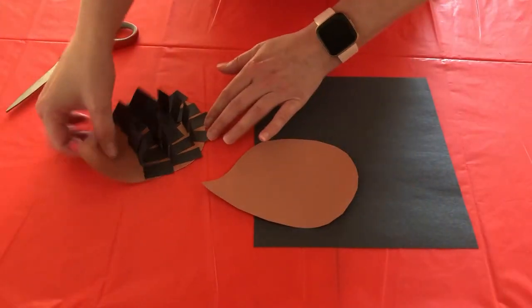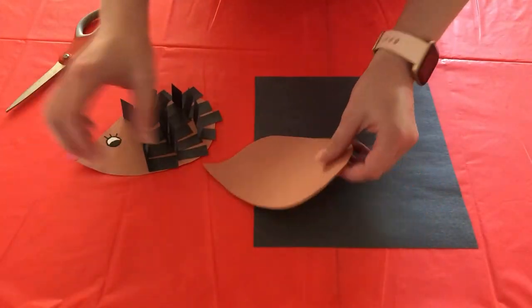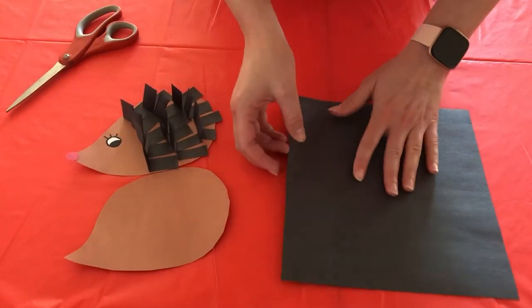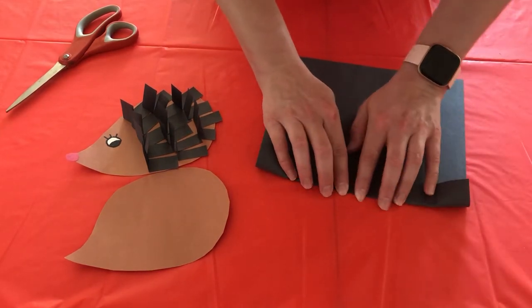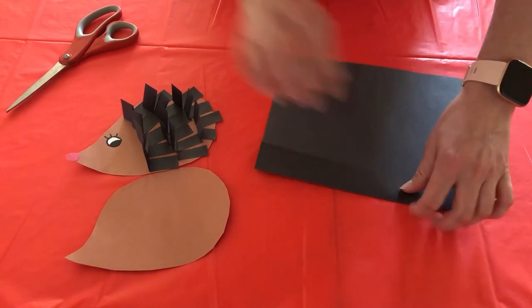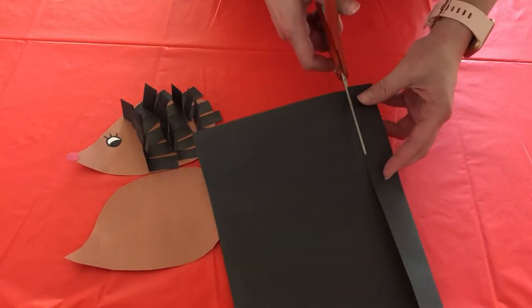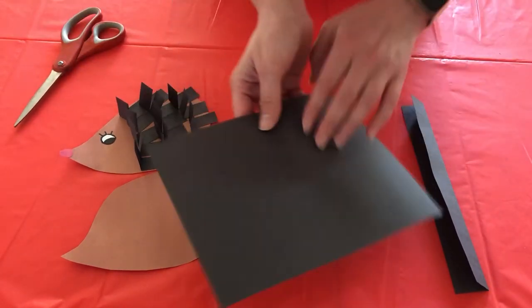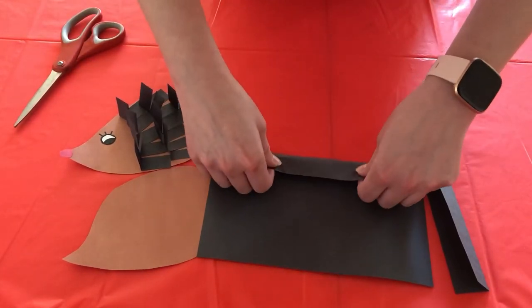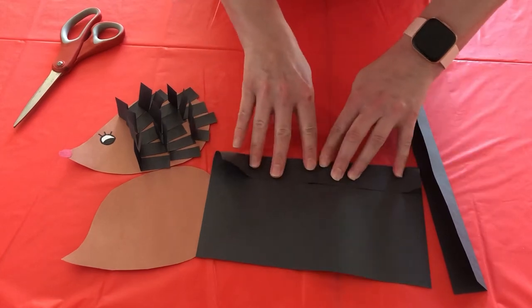Now we are going to make these spikes for our hedgehog. What you're going to do is you're just going to take your black paper and kind of fold a little piece over like this, and then you're just going to cut this out. I'm actually going to do it one more time because I feel like I always need more quills.